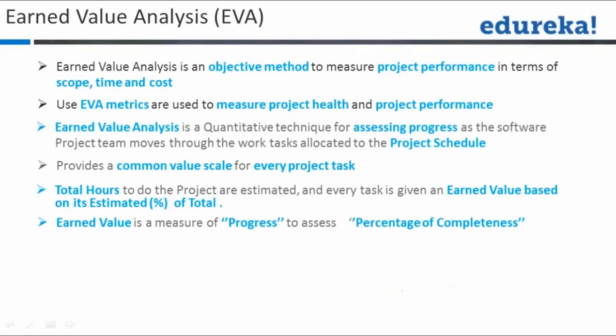Earned value analysis is an objective method to measure project performance and is used to measure project health and project performance. It's a quantitative technique for assessing progress as the project goes through the work tasks allocated, providing a common value scale for every project task. Let me take an example and explain how this is done.